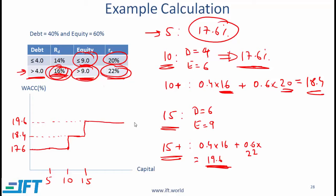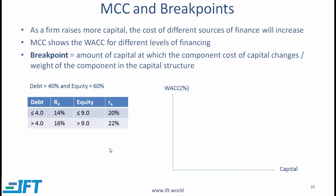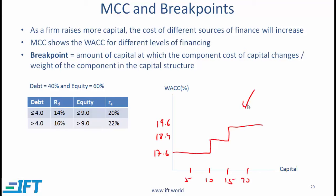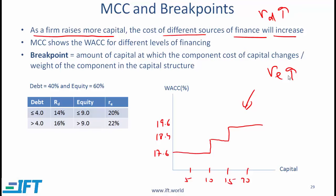What we have created here is the marginal cost of capital schedule, which shows the weighted average cost of capital for different amounts of capital raised. As a firm raises more capital, the cost of different sources of finance increases — as a company borrows more, riskiness goes up, so the cost of debt rises. Similarly, as a company raises more equity, the cost of equity goes up. That's why the marginal cost of capital schedule is upward-sloping.